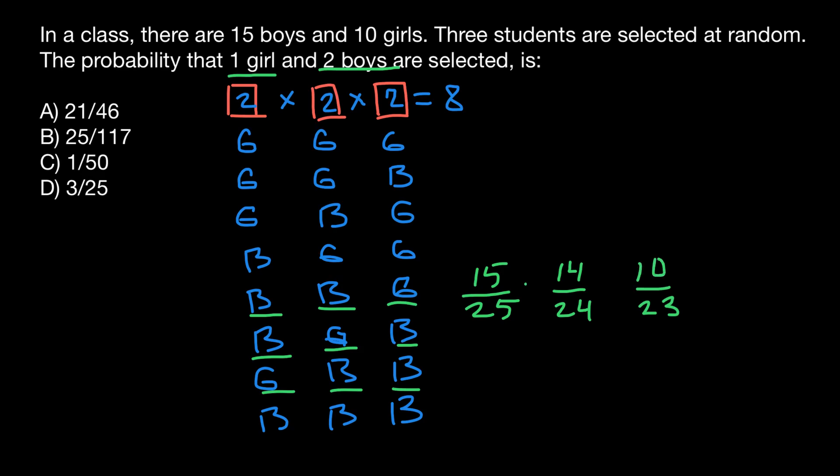And now we have to multiply all these probabilities, and we are going to get 2,100 divided by 13,800. Now let's check what is going to be the probability of this combination. Right away, I can tell you the probability would be the same, but let's do the math again.